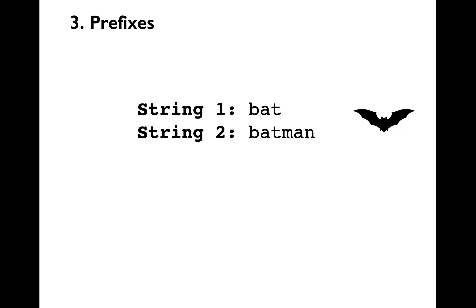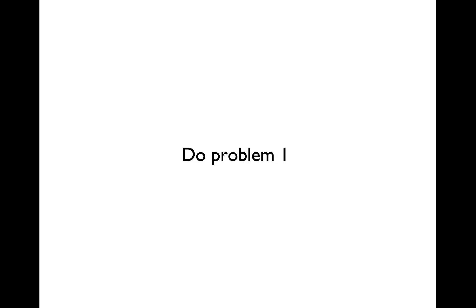The third exception is prefixes. A prefix is the first part of a string. For instance, comparing 'bat' with 'batman': 'bat' is a prefix of 'batman'. Whenever you have prefixes, Python compares nothing versus some character, and nothing always comes before something in Python. So 'bat' comes before 'batman' because 'bat' has no character in the fourth position. Note: worksheet problems will not be covered in the lecture videos — use the slide deck ordering as guidance to work through them.